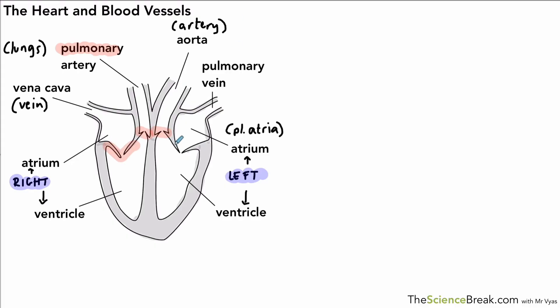We also have valves — these are between the atria and the ventricles and also at the beginning of the main blood vessels leaving the heart. They're very important because they make sure that blood travels in one direction only and in the right direction.